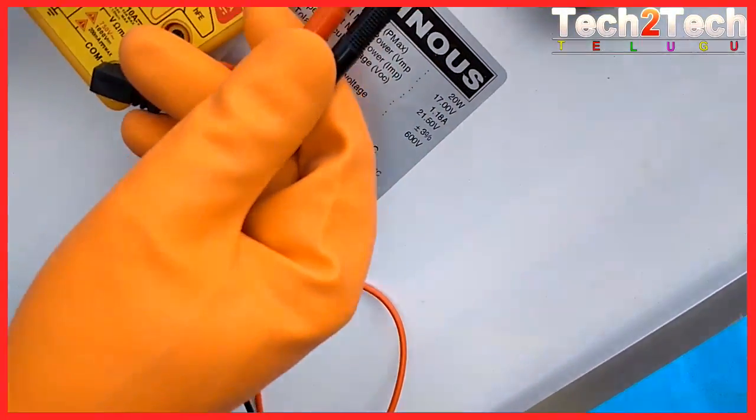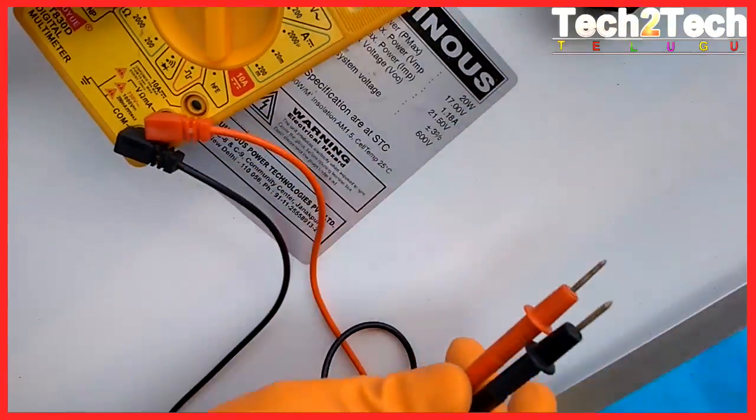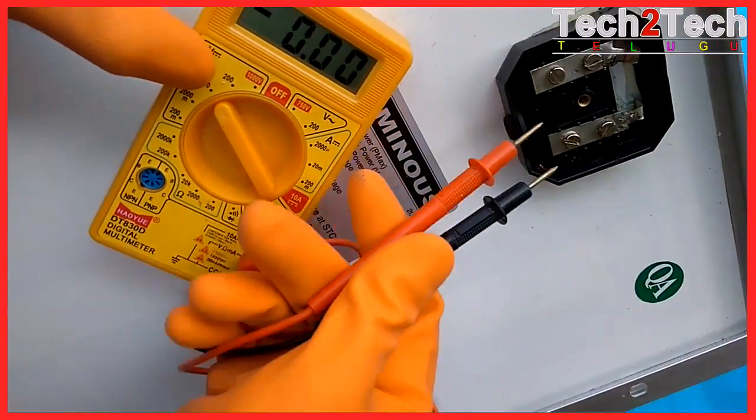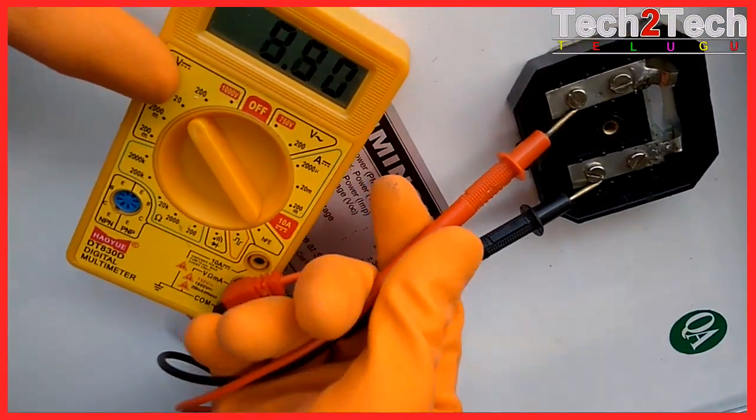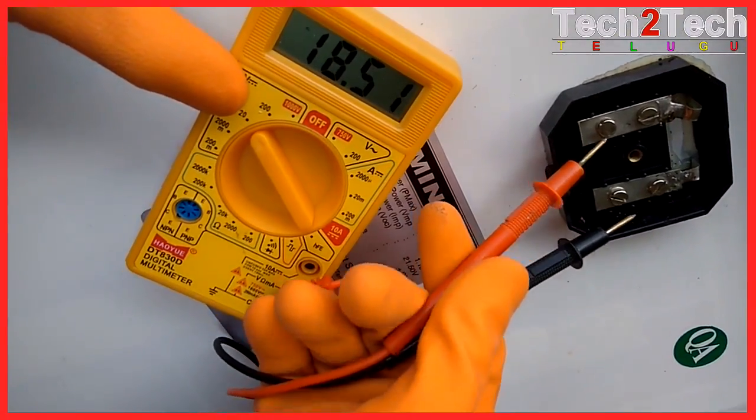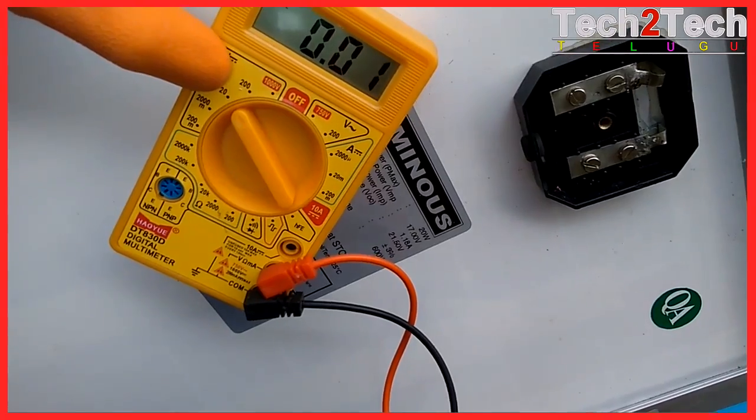You will receive a fairly accurate reading of the volts created by your panel. If the panel is new, then the voltage should be very close to the panel's rating. For used panels, a slightly lower voltage should still be acceptable, although this is up to your own preference.